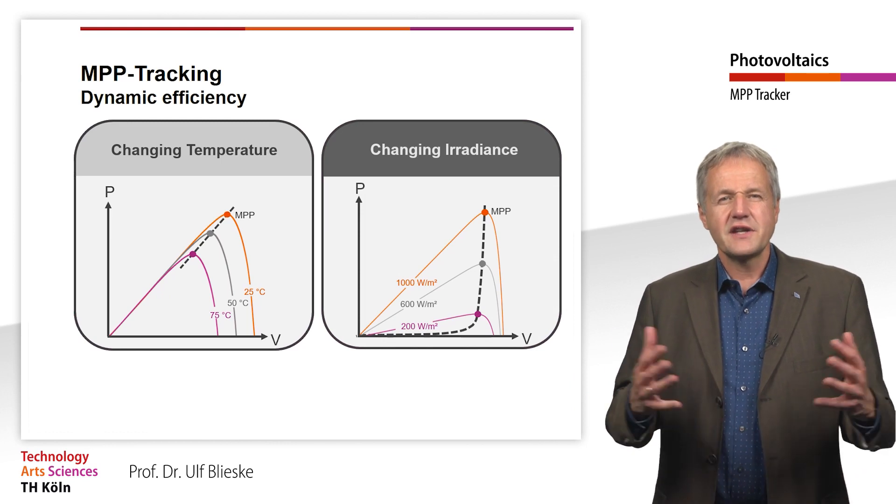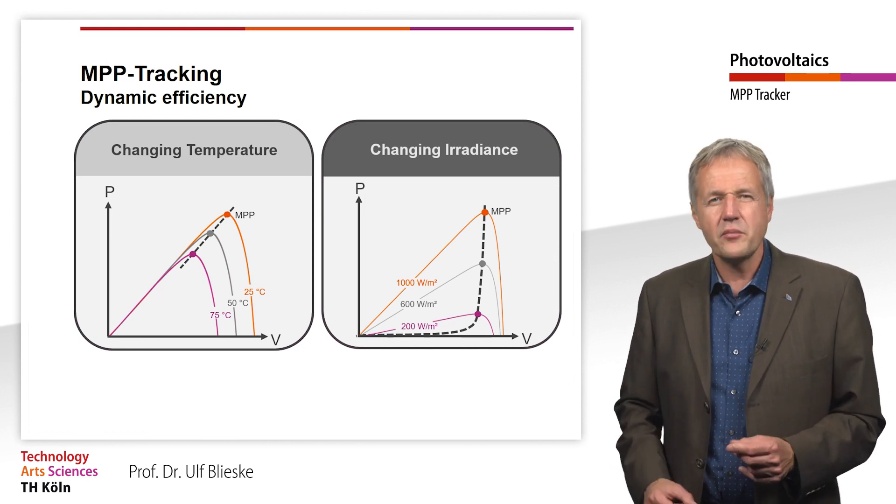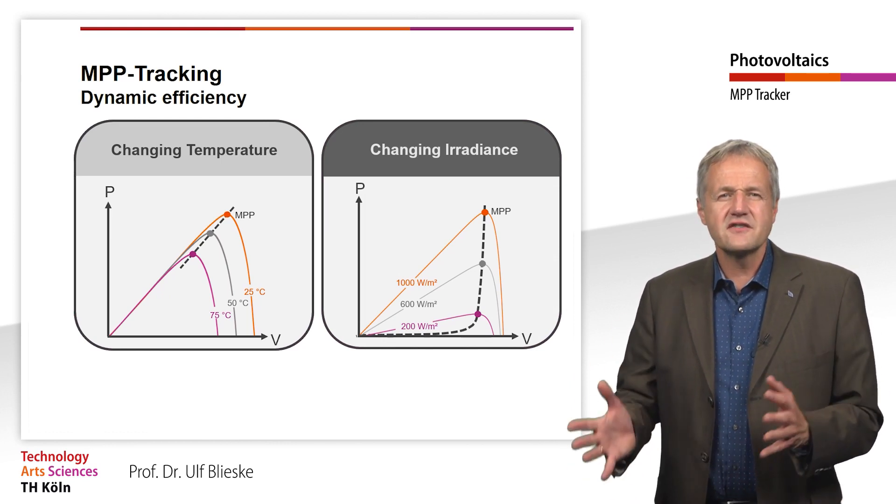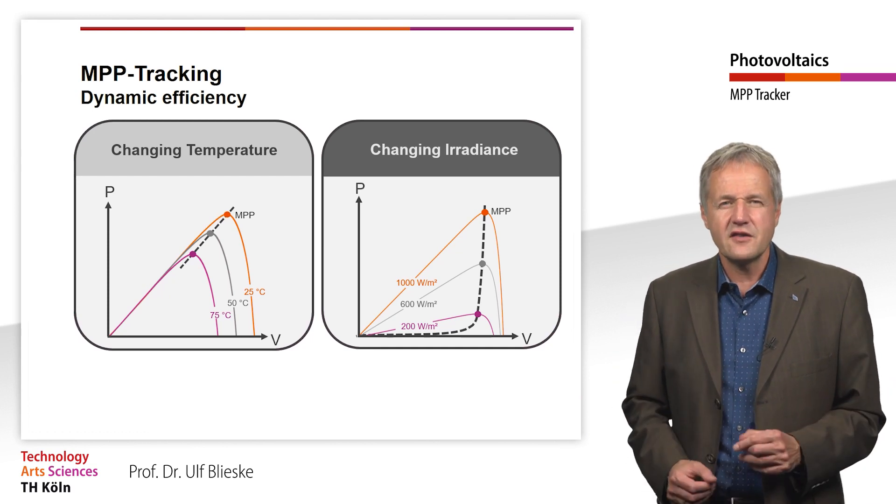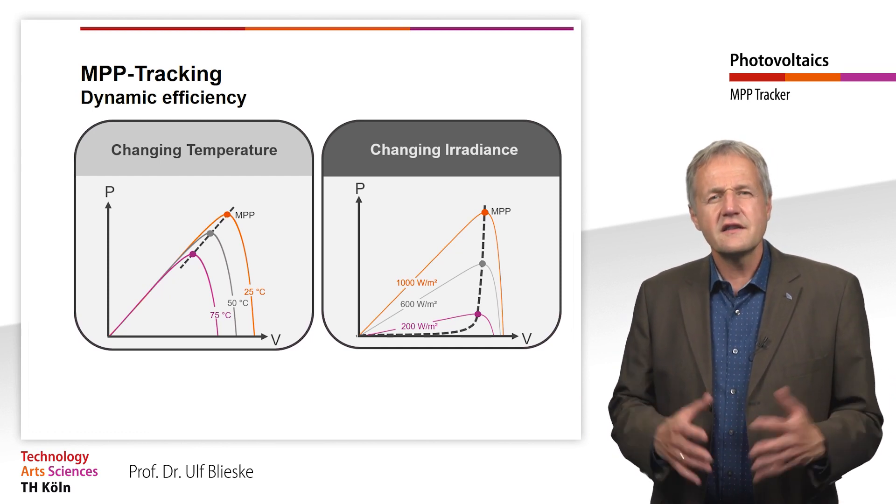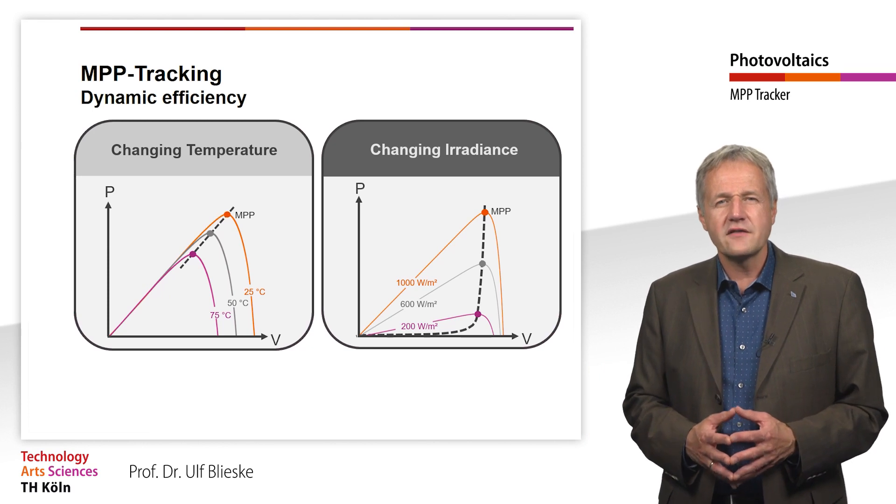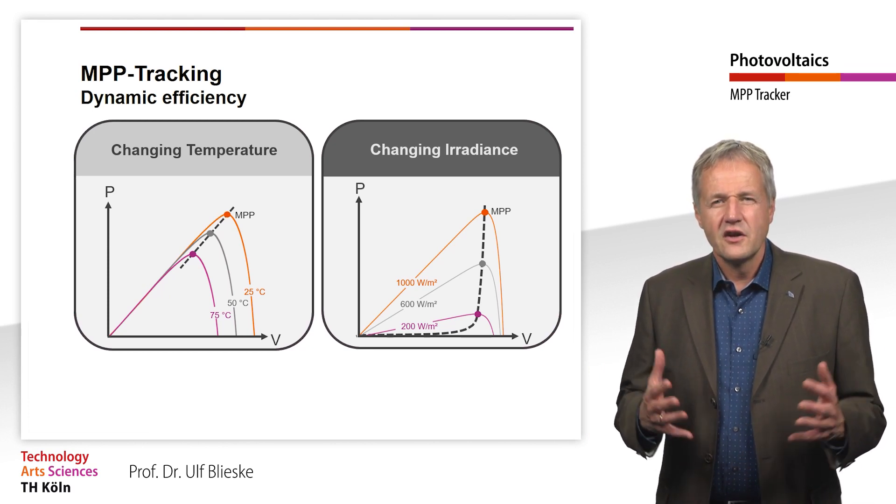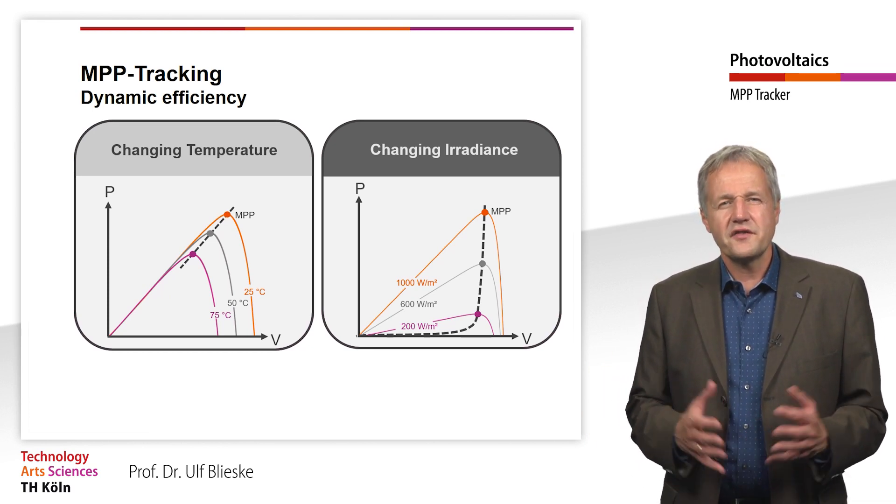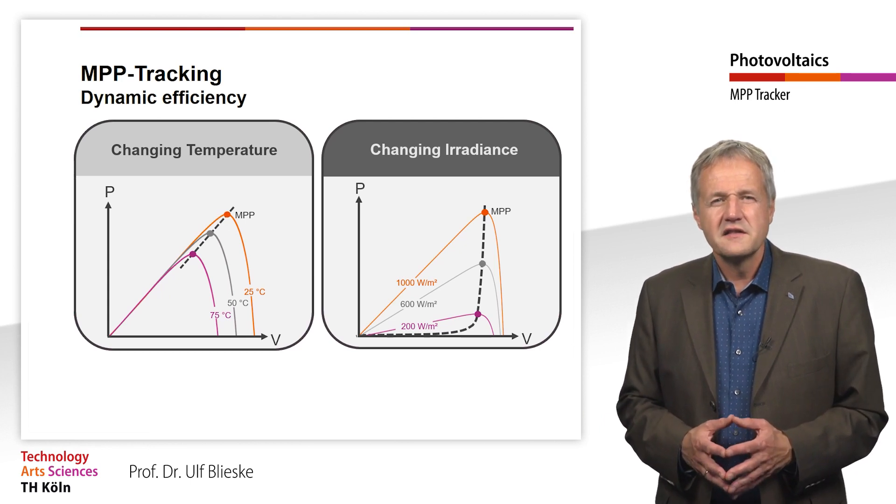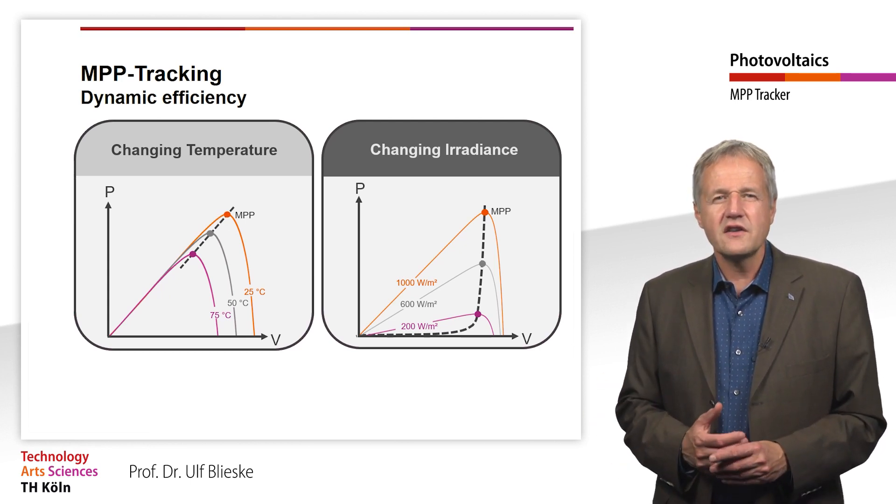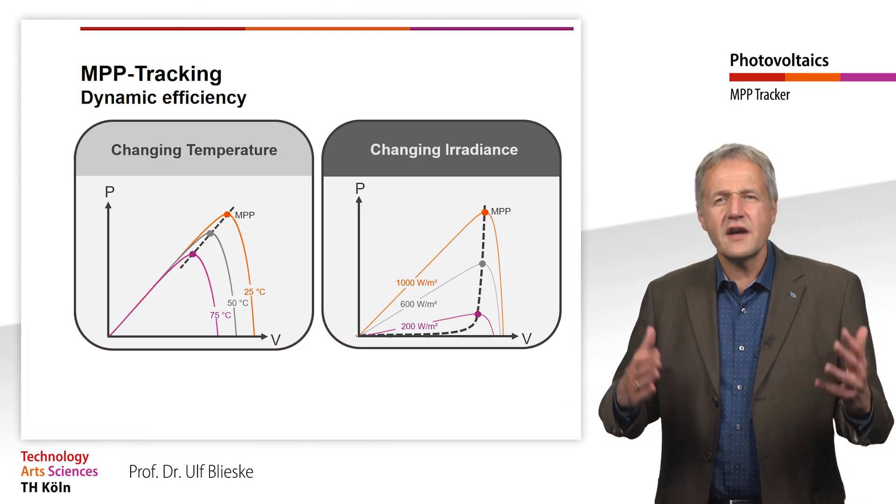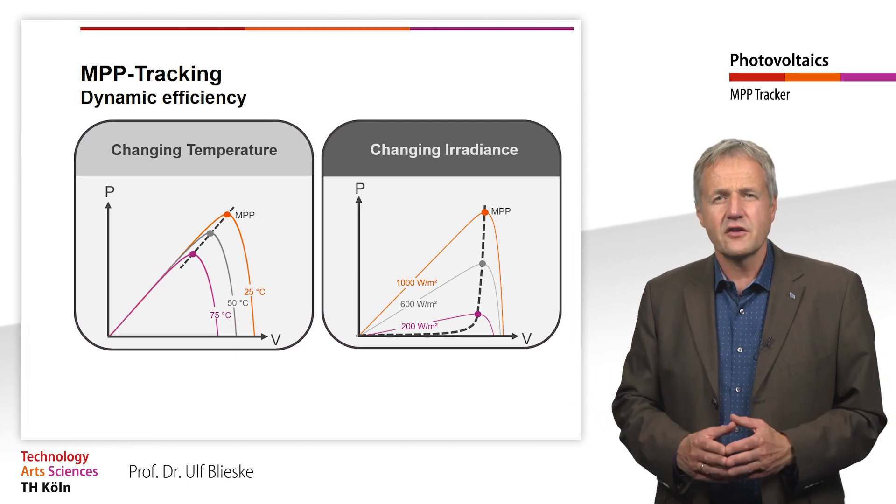For MPP tracking, the irradiation is nevertheless of greater importance as it can change significantly faster than the module temperature. This is mainly due to the thermal mass of the PV modules, which gives the module temperature a certain inertia. The module temperature changes only slowly and there are no sudden jumps in the characteristic curve.